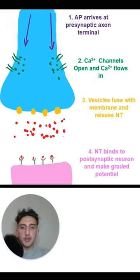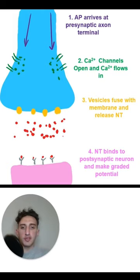When these vesicles release the neurotransmitter into the synaptic cleft, this neurotransmitter can then bind to the postsynaptic neuron and make a graded potential. This graded potential in the postsynaptic neuron can then go on to fire another action potential and therefore repeat this entire process over and over.